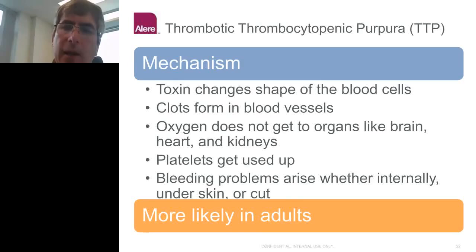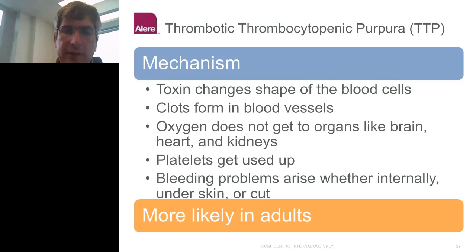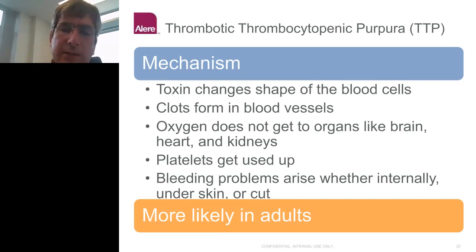There is also a condition called thrombotic thrombocytopenic purpura. The toxins cause red blood cells to change shape, clots start forming all over in blood vessels, oxygen stops getting to organs like the brain, heart, and kidneys. The platelets get used up, leading to more internal bleeding — you see spots under the skin. This illness tends to be more likely in adults.